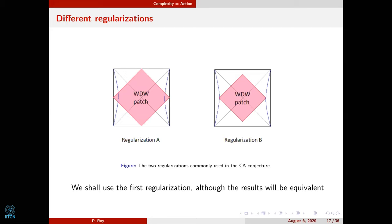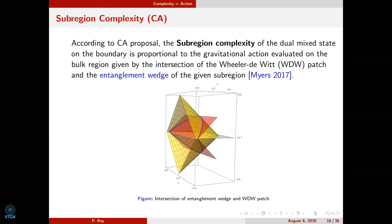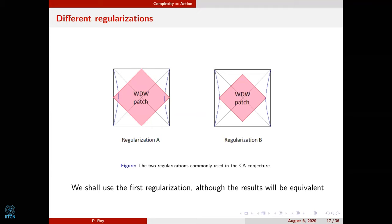Since the Wheeler-DeWitt patch extends to the boundary of spacetime, regularization is needed. There are two possible regularizations considered in the literature. We shall primarily use the first, although we have worked out results for the second regularization and they match entirely.